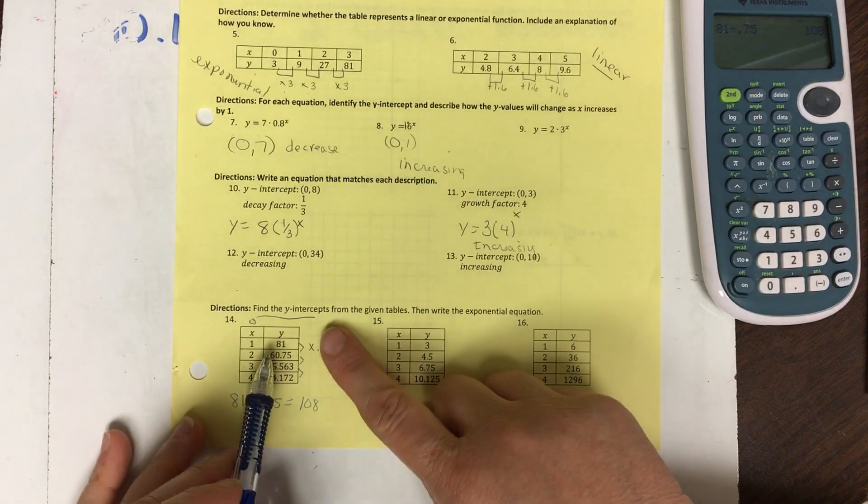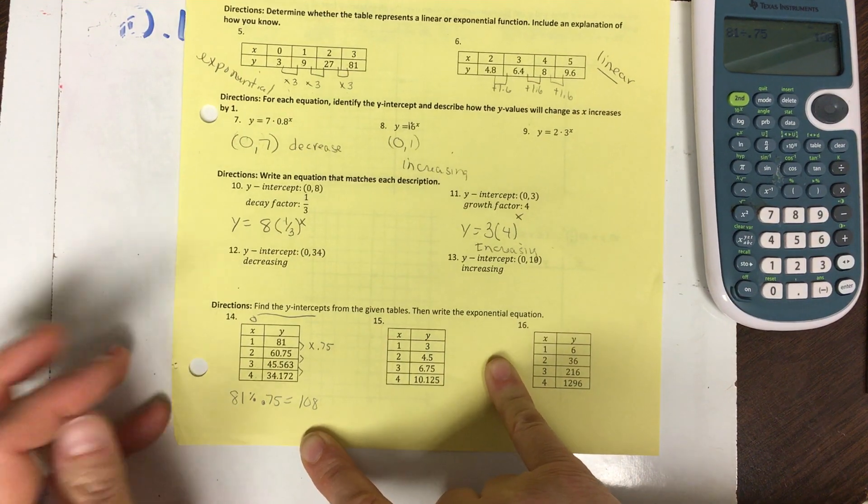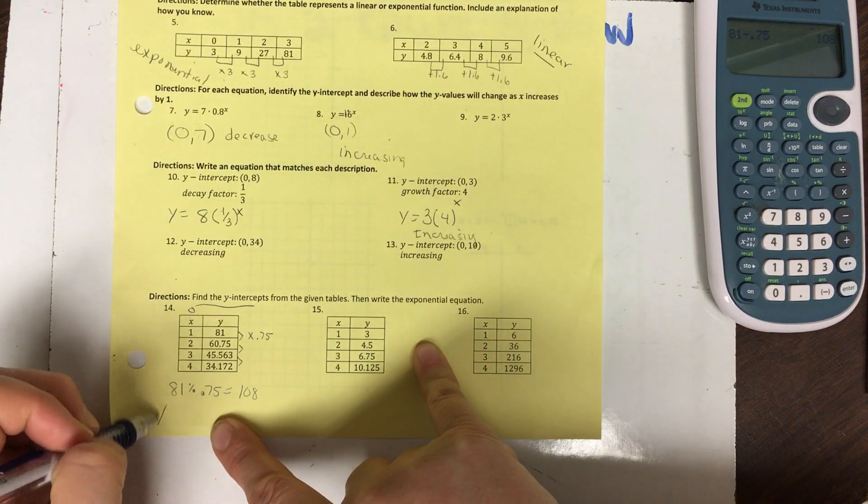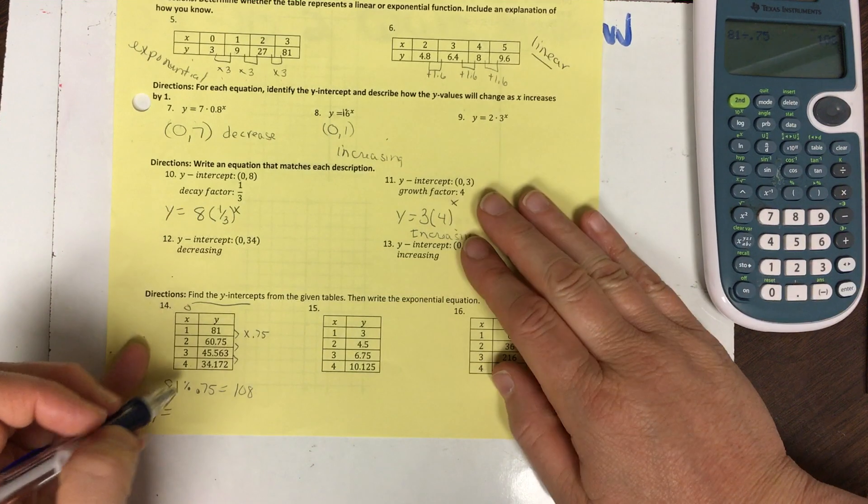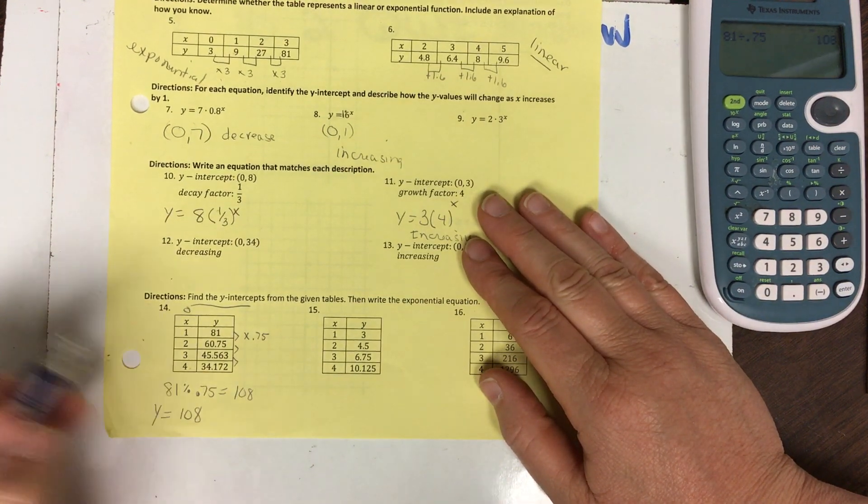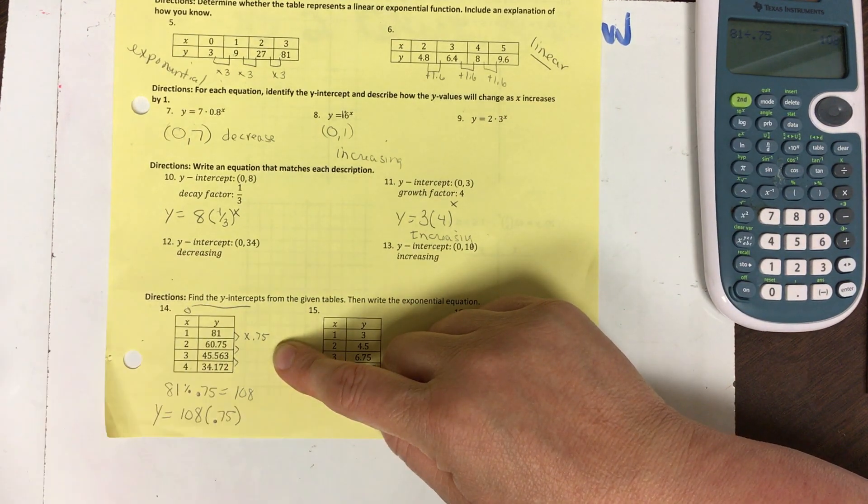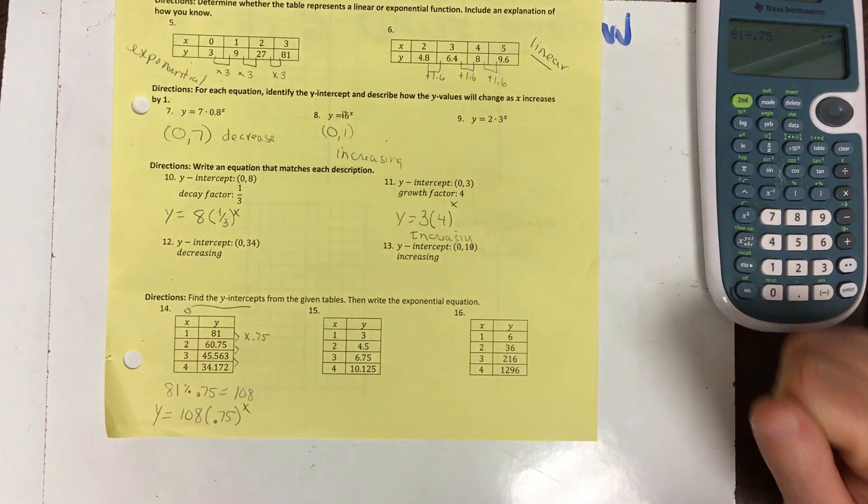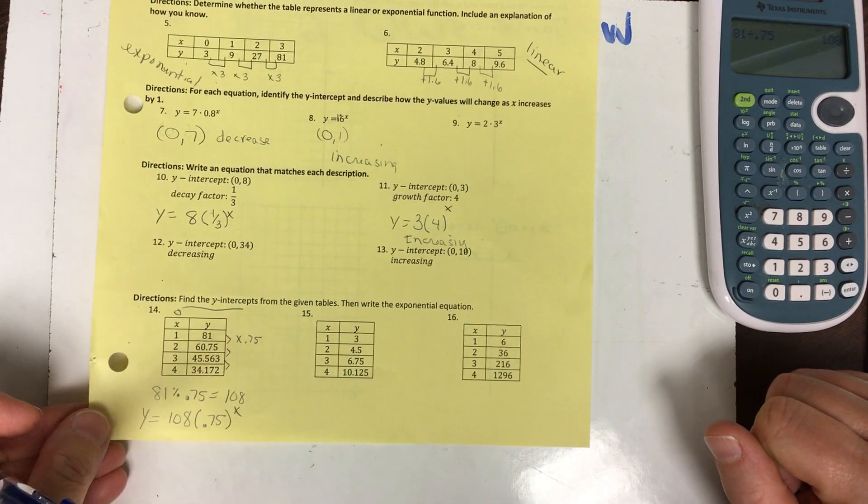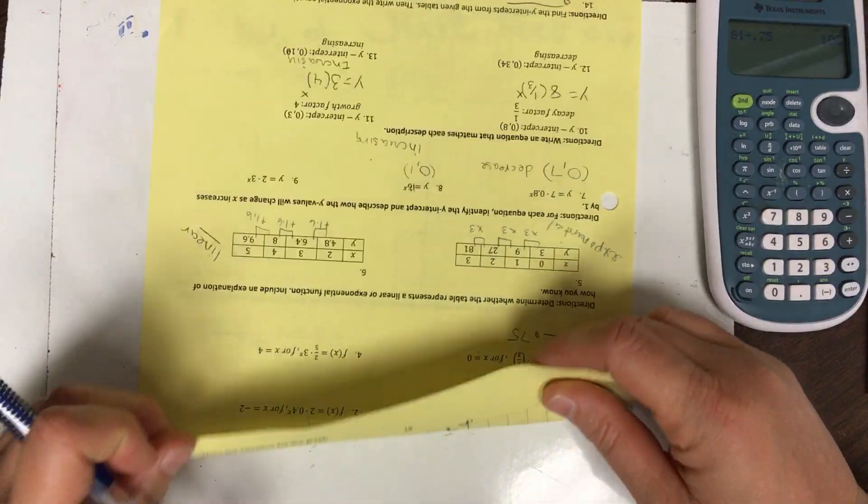So my y-value is 108. So now I can write my equation. I know from earlier, and from my other board that we were writing with, my y-value is my first number, then I put this in, my common ratio, and then x. Alright, let's take a look at the back side, where we have t-charts and graphing.